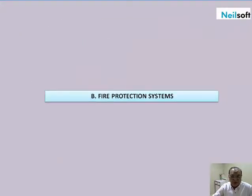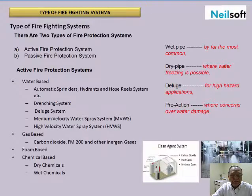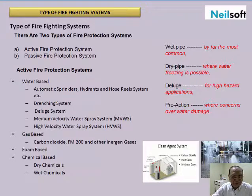Fire protection systems — this section explains what types of fire protection systems are available. There are two types of fire protection systems: active fire protection and passive fire protection.